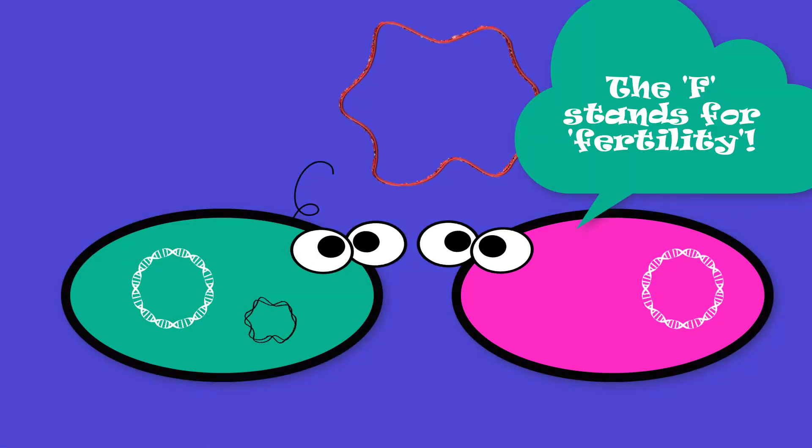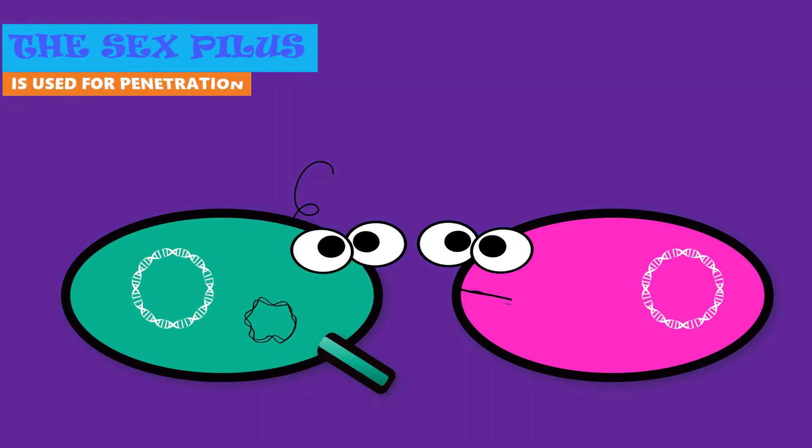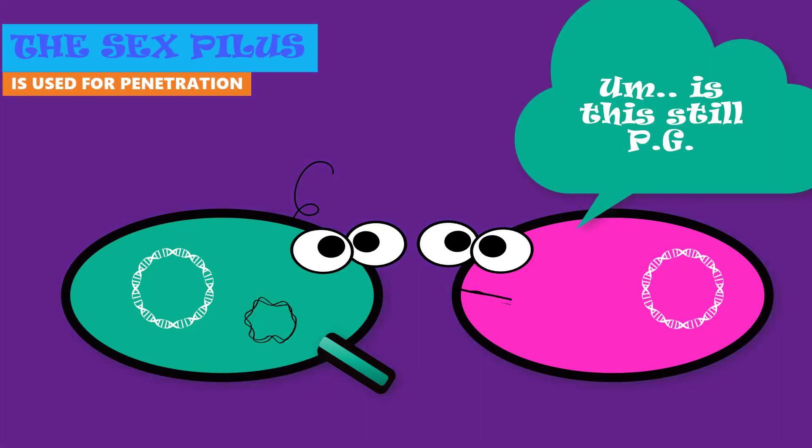The F-plasmid contains genes necessary that allow the bacteria to form a sex pilus. The sex pilus can penetrate the cell wall and membranes of another bacterium.